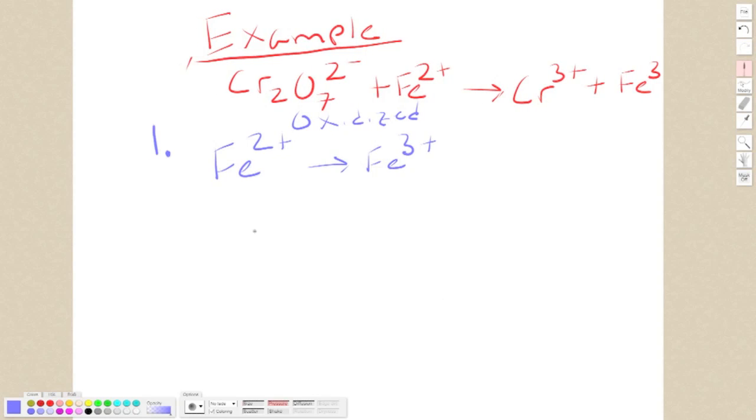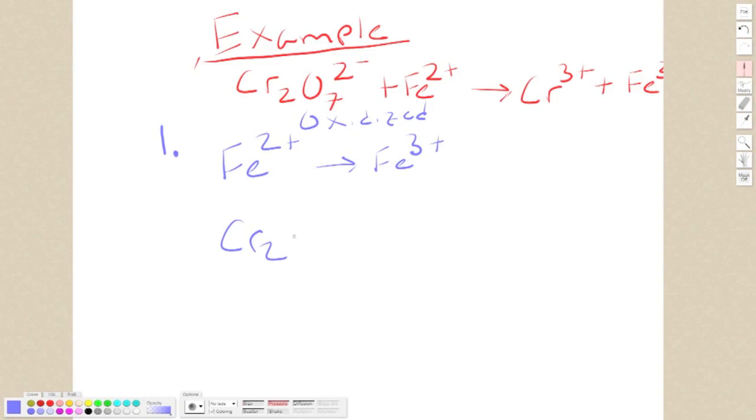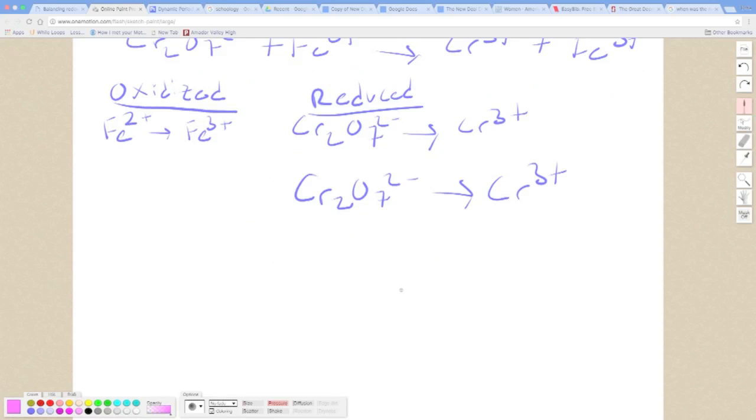For the reduced portion of this, it'll be our chromium. So we have Cr2O7 2- and this has a net of plus 6, so we're just going to put that up there, yields Cr3+. And that's what we got for that. Alright, so we just got our half reaction for the chromium right here.